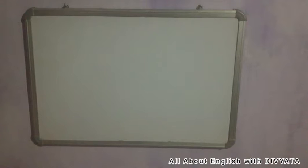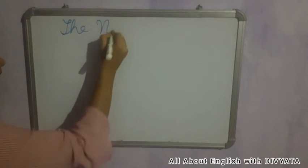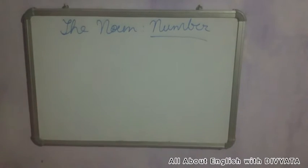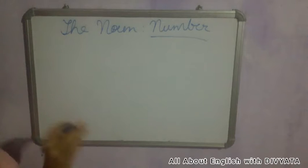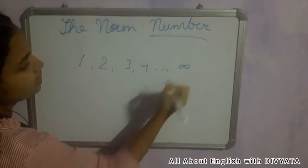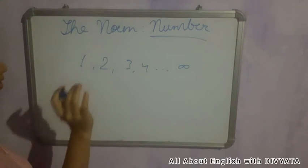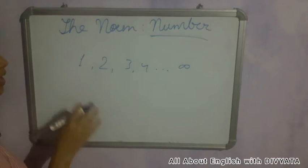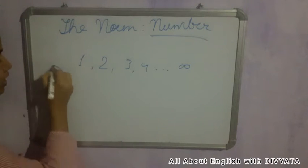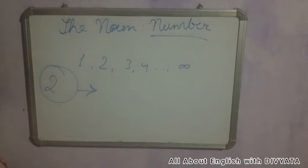Hey guys, welcome back to my channel, all about English with Divyata. In this video we will study unit 5 of English language, that is the noun number. Now when I say number, what is the first thing that clicks in your mind? 1, 2, 3, 4 till infinity — that's what comes to mind. But in English language, we have only two types of numbers.